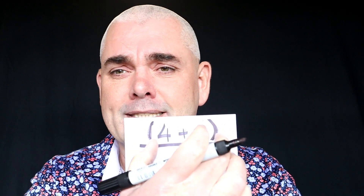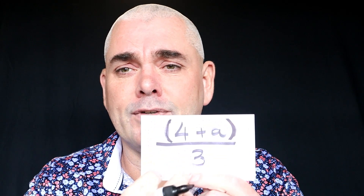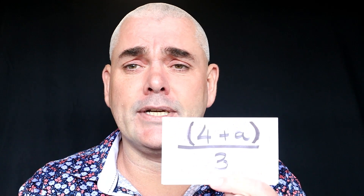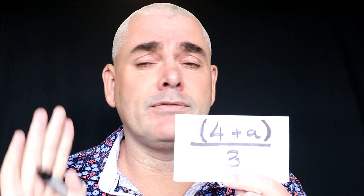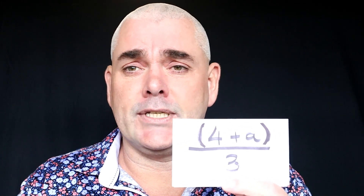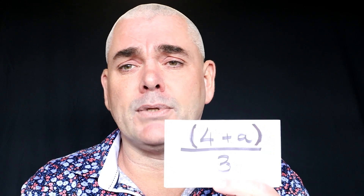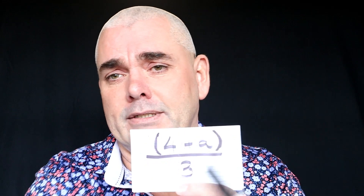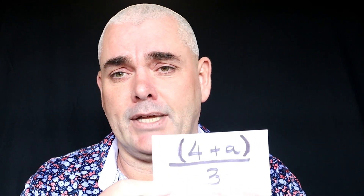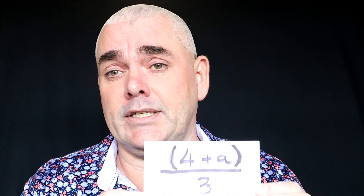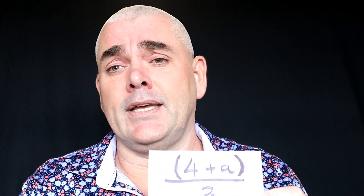By putting brackets around everything up in the numerator, it helps protect all that and keeps it together. My first move when I see it's divided by three — the opposite of division is multiplication — so I'm going to multiply both sides by three. I'll reinforce this all the time and you'll see me do all this kind of stuff for a good reason.